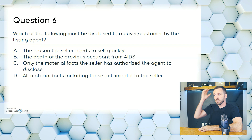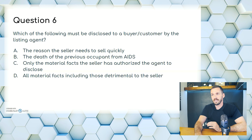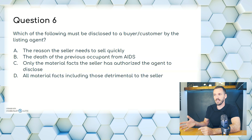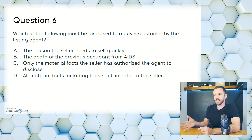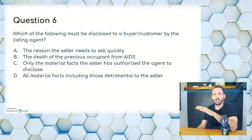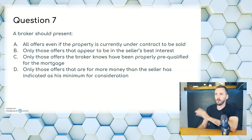Question 6. Which of the following must be disclosed to a buyer or customer by the listing agent? A, the reason the seller needs to sell quickly; B, the death of the previous occupant from AIDS; C, only the material facts the seller has authorized the agent to disclose; or D, all material facts including those detrimental to the seller. All material facts, no matter what, need to be disclosed. The death of anyone is not a material fact and not anyone's business. The answer is D.